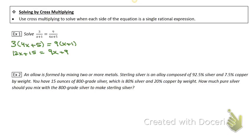Then you just want to solve the equation by subtracting 9x from both sides and subtracting 15 from both sides, and then you want to divide by three.